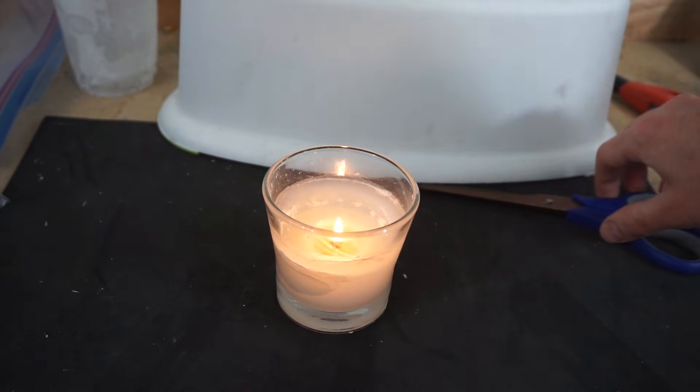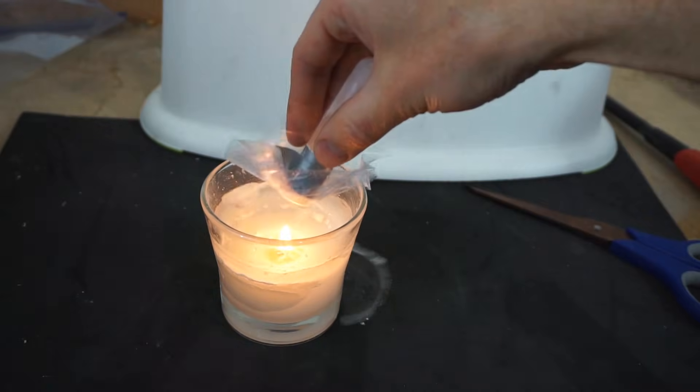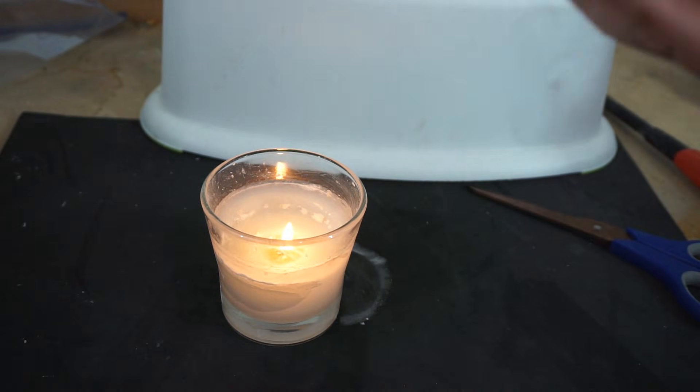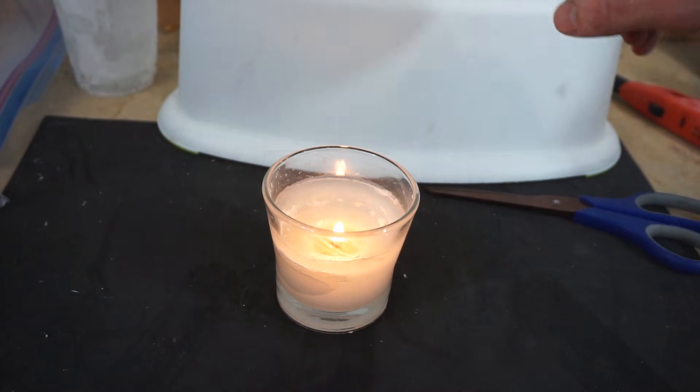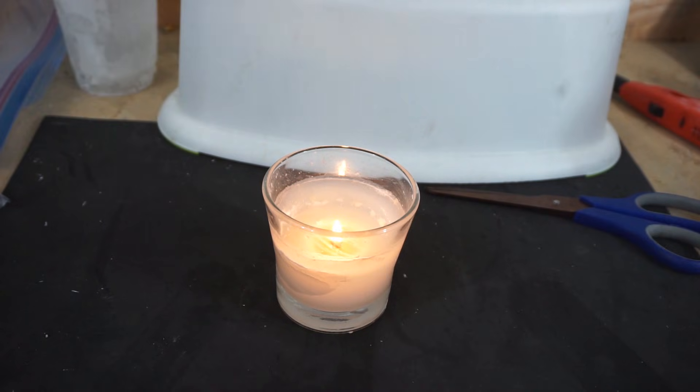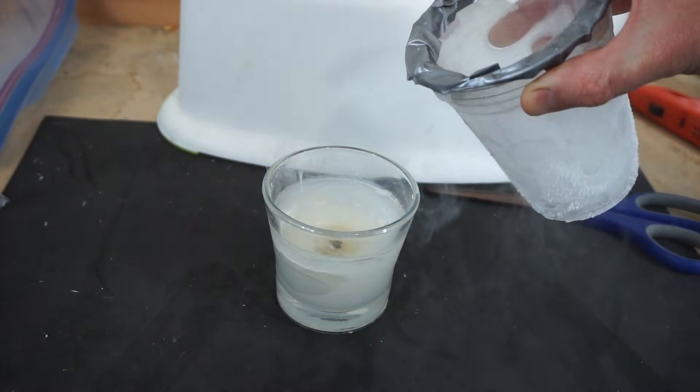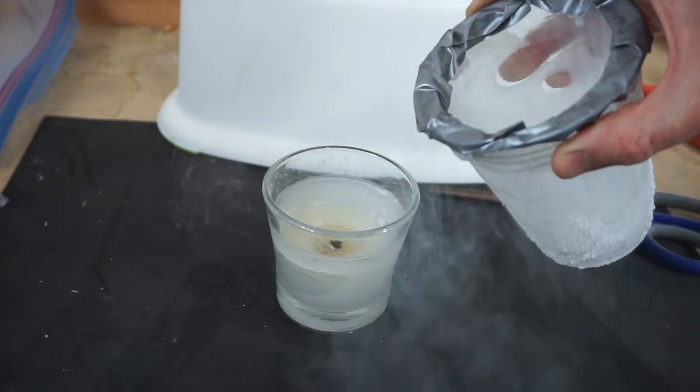So you can see what happens when I pour it on this fire here - the fire can keep burning. You can tell that was liquid air going in; it had oxygen with it so the fire could keep burning. For example, if I pour just the liquid nitrogen on it, it immediately goes out even before the liquid gets there.